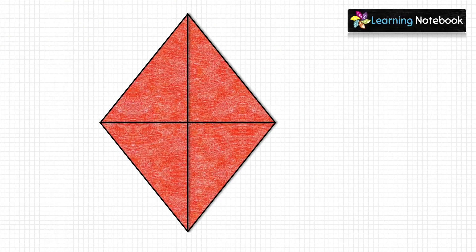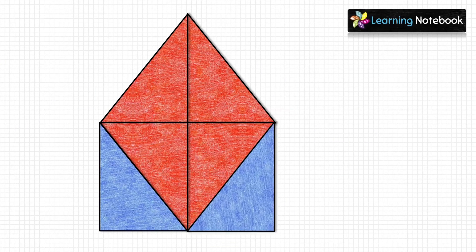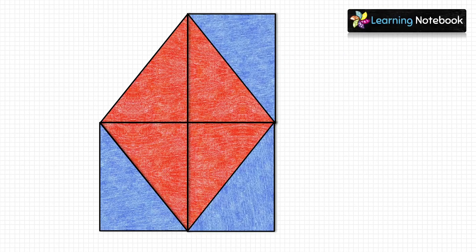Now let's take the red rhombus and we will arrange the cutouts of blue rhombus as shown here to form a big rectangle.